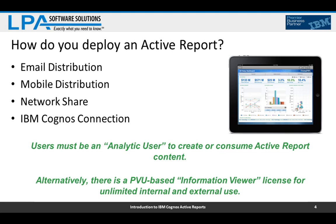In addition, there is a PVU-based license — an unlimited license type based on processor value units, relative to the size of your Cognos server. There's also an Information Viewer license for unlimited internal and external use. If you have many customers who will use active reports, this unlimited PVU-based license may make sense. The minimum licenses required are the Analytic User license for interactive users, and the Information Viewer license for people who will only receive and use active reports without writing new ones.